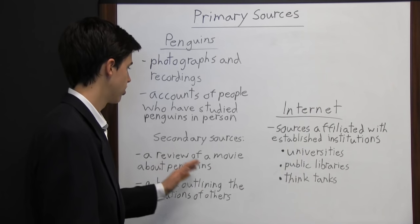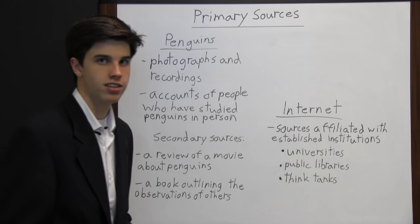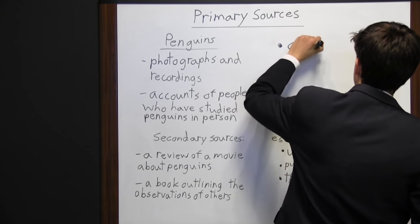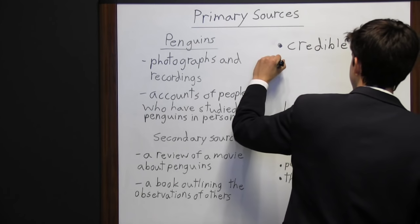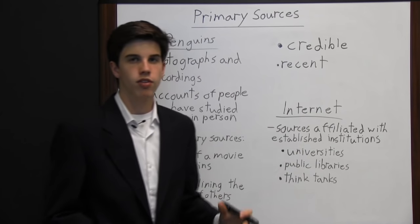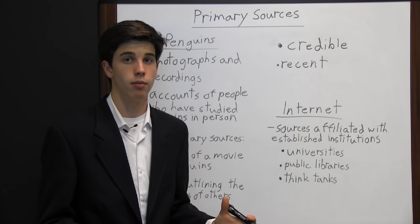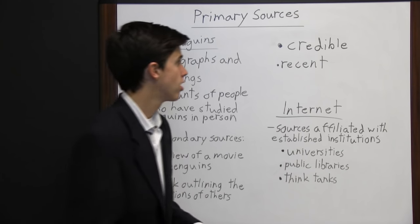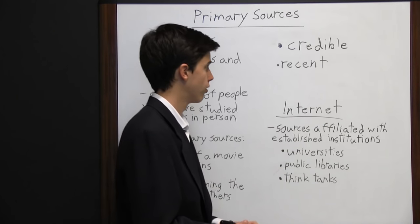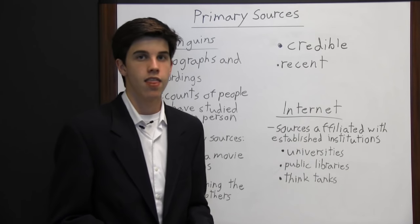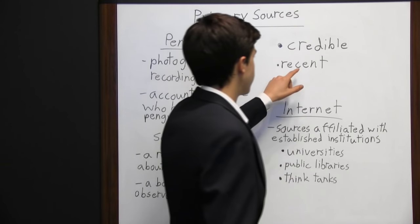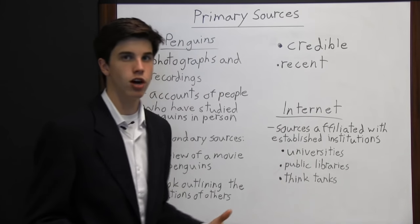When looking for a primary source, researchers should make sure what they're looking up is credible and recent. The "recent" criterion only matters if the subject is still ongoing today. For example, research about Abraham Lincoln doesn't need to be recent, but research about the current government of Italy would need to be recent because it's still changing. It's also important that sources are credible so you know they're true.